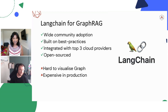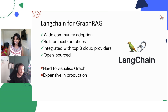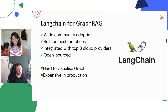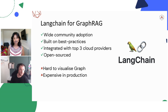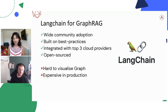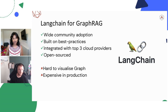And then the last implementation — LangChain, probably your favorite implementation. Wide community adoption is definitely a selling point. Most of the examples I've seen have been with LangChain and AuraDB from Neo4j. I came across a good article from Neo4j where they had solution accelerators for Azure, GCP, and AWS, so there's good adoption across cloud providers.